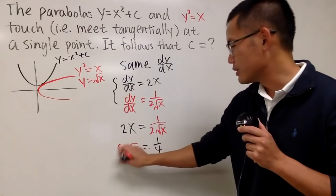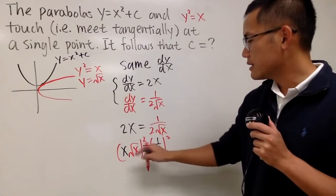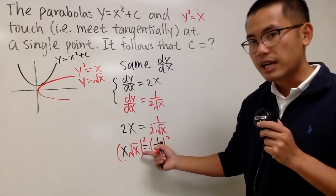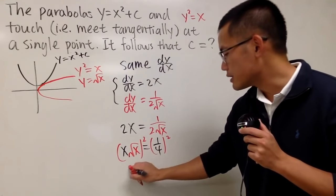And of course, we can just square both sides. In that case, x squared times square root of x squared, which is just x. x squared times x is x to the third power.